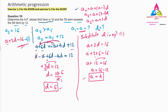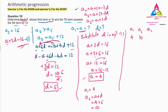Now we determine the AP: a1 = 4, a2 = a + d = 4 + 6 = 10, a3 = 10 + 6 = 16, a4 = 16 + 6 = 22, and so on. The AP is 4, 10, 16, 22, ...